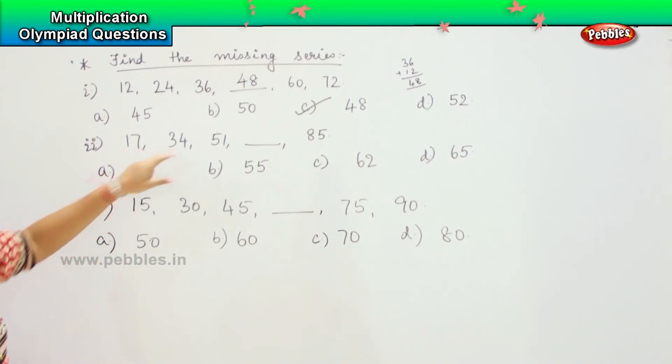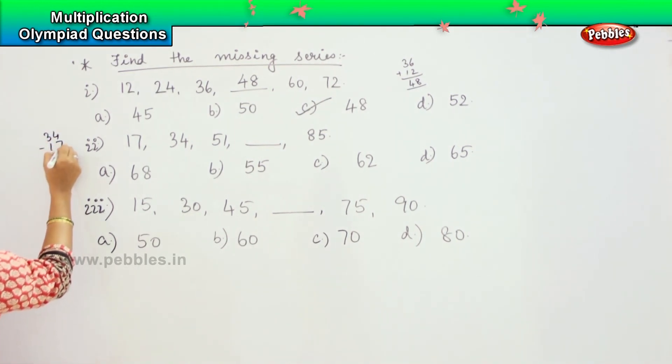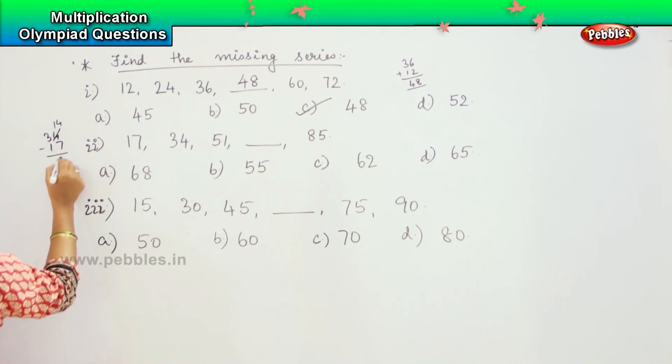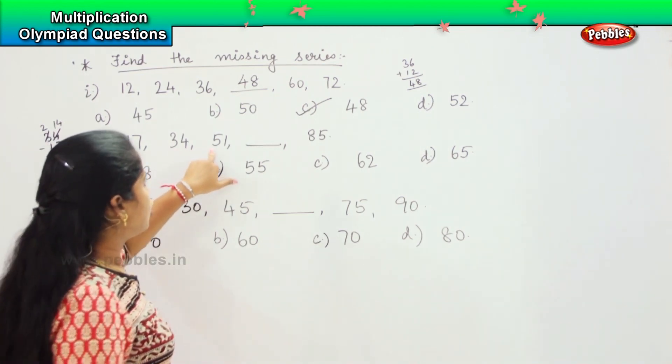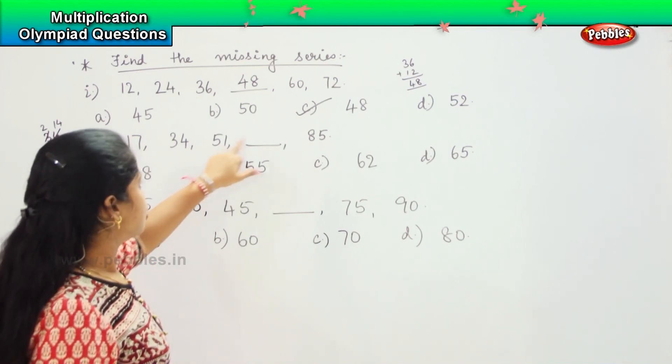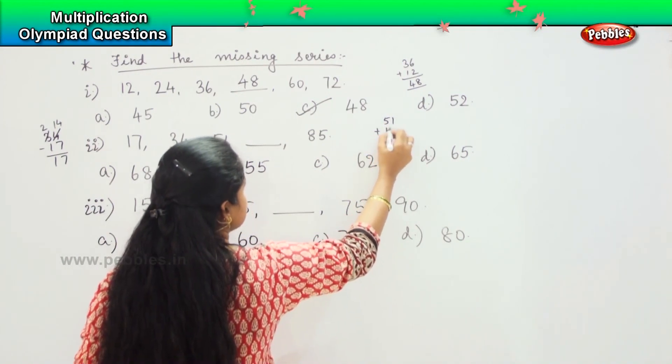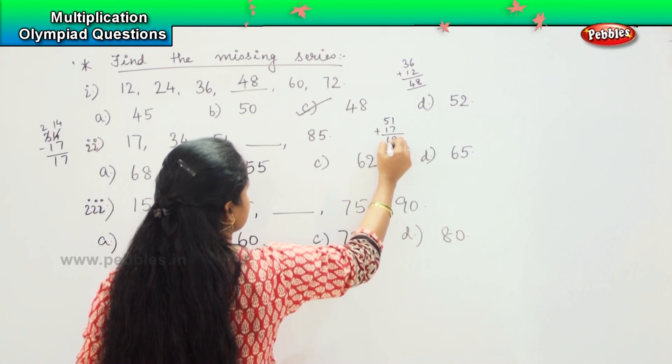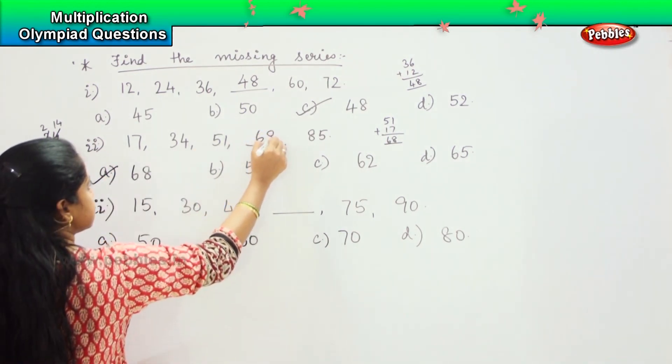Shall we do the next one? From 17 to 34, what is the difference? Count and see. Shall we reduce it and see? 34 minus 17. 14 minus 7 is 7, and 2 minus 1 is 1. So it is skip counting of 17. From 34 to 51 again it is 17. So you need to add 51 plus 17 again. 1 plus 7 is 8, 5 plus 1 is 6. So the answer is 68. Where can you find 68? Option A.